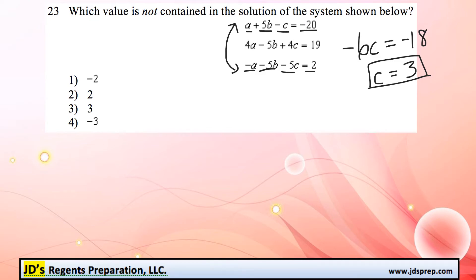Now let's look for another two equations we can combine together to eliminate a variable. I notice we have a positive 5b here and a negative 5b here. So if we were to add the first two equations together, the b variable would be eliminated. So let's go ahead and do that.